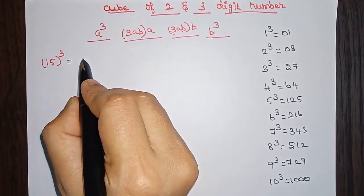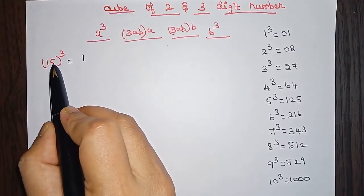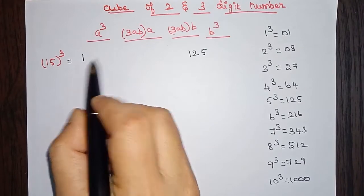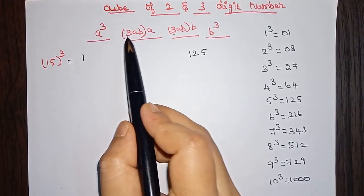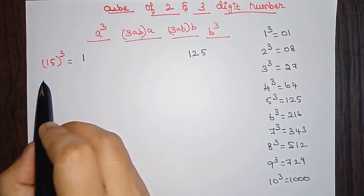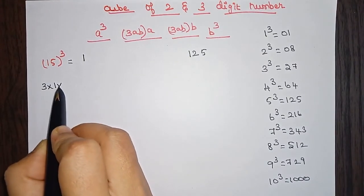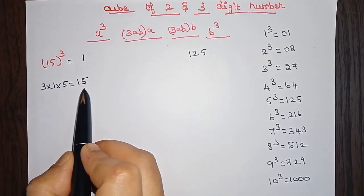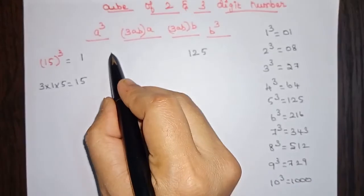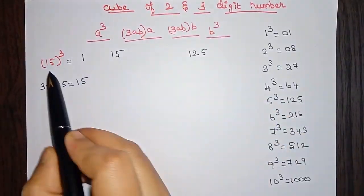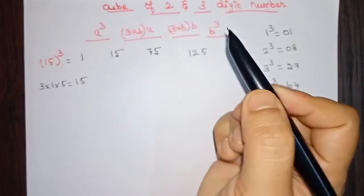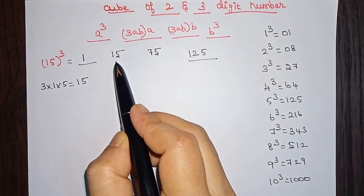First we need to find the cube of 1, so the cube of 1 is 1. Then we find the cube of 5, so the cube of 5 is 125 — that is the last value. Now in between we have to find 3ab, the common term. So 3 into 1 into 5 gives us 15. Now we find 3ab into a: 15 into 1 gives us 15. Then 3ab into b: 15 into 5 gives us 75.